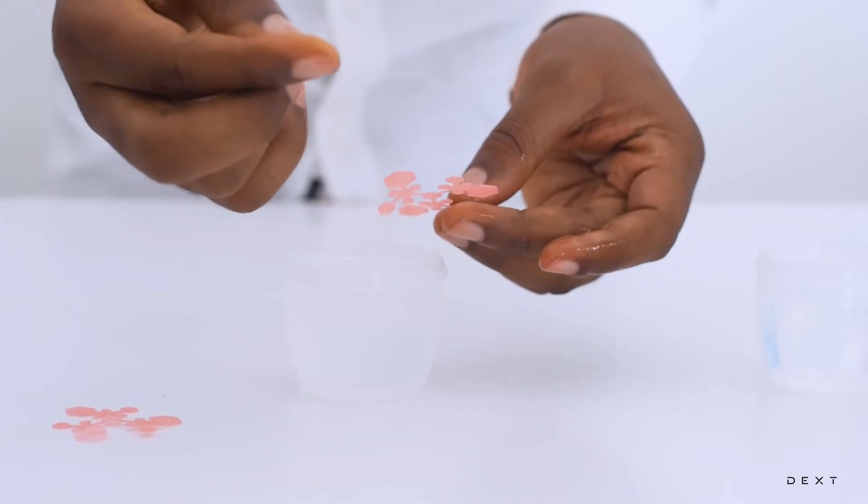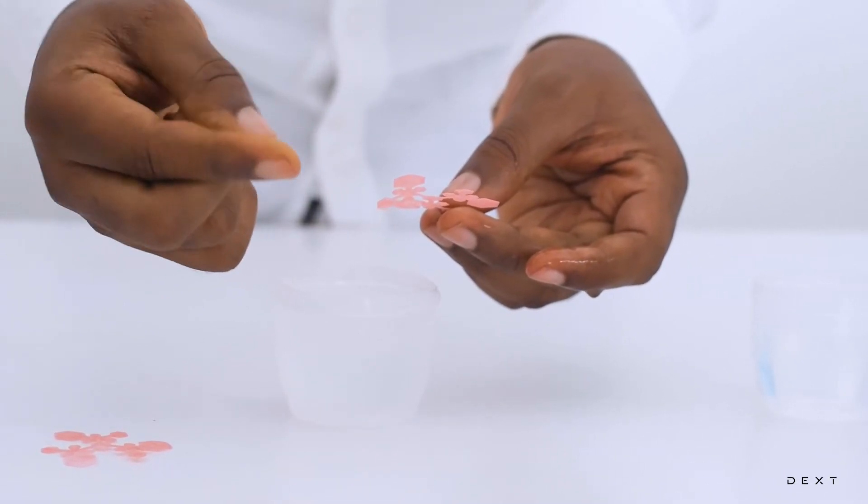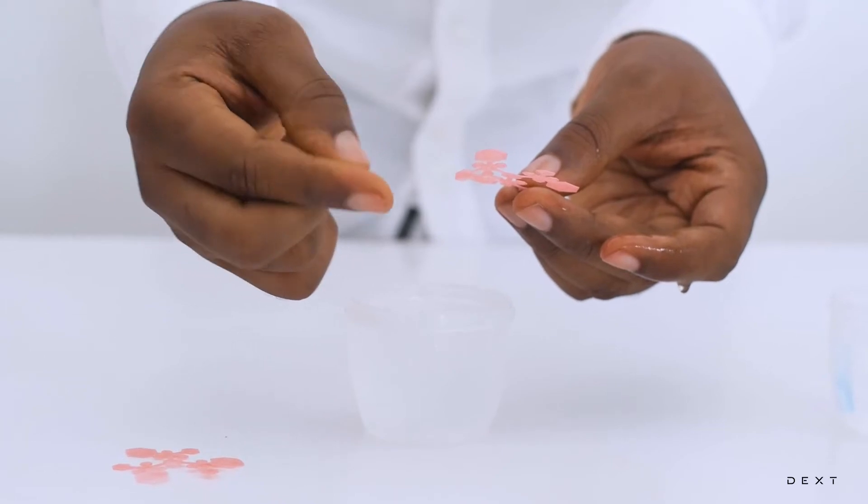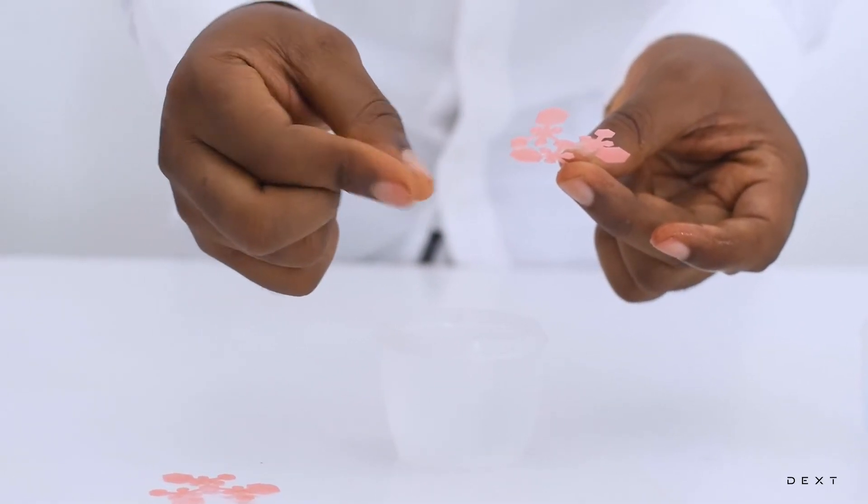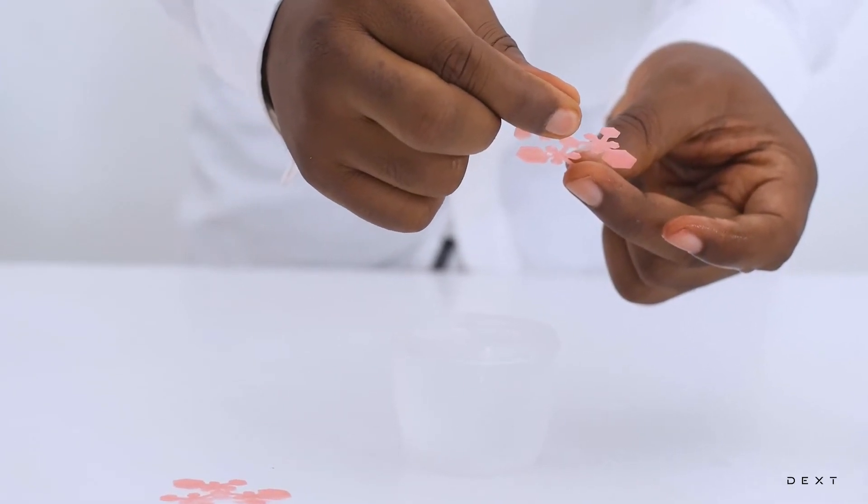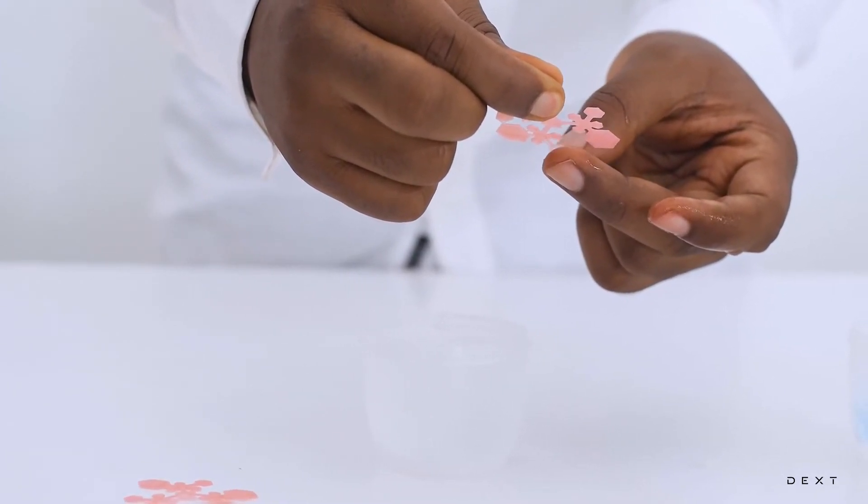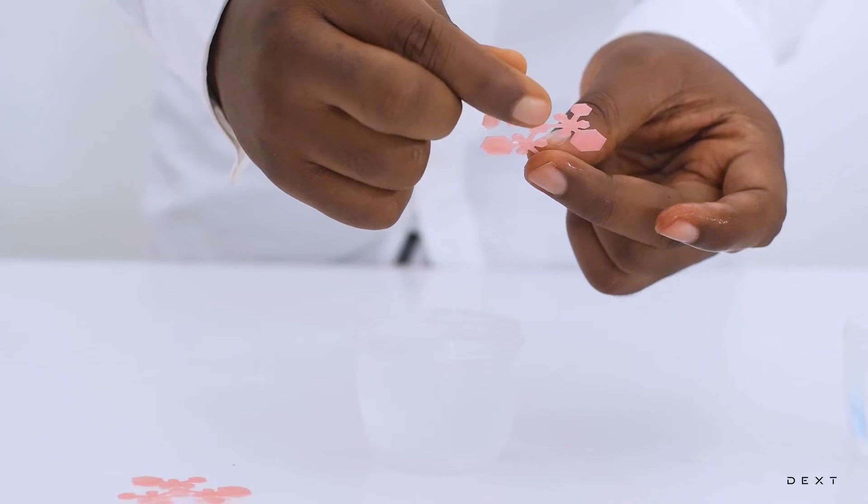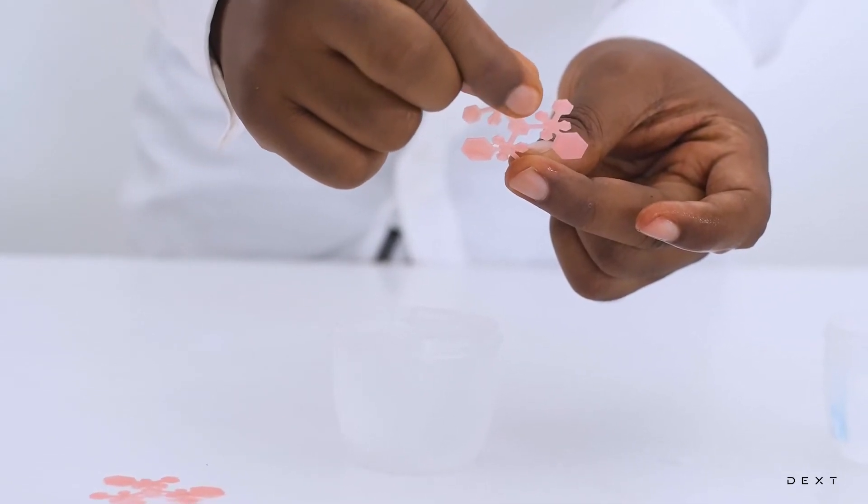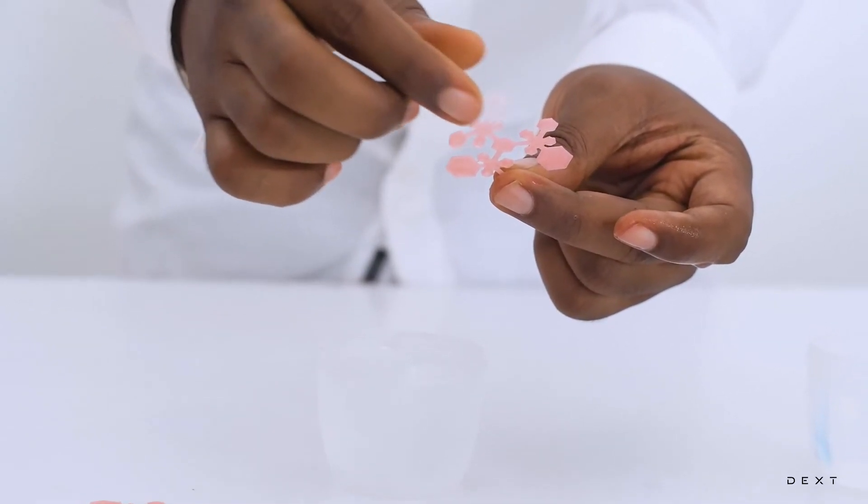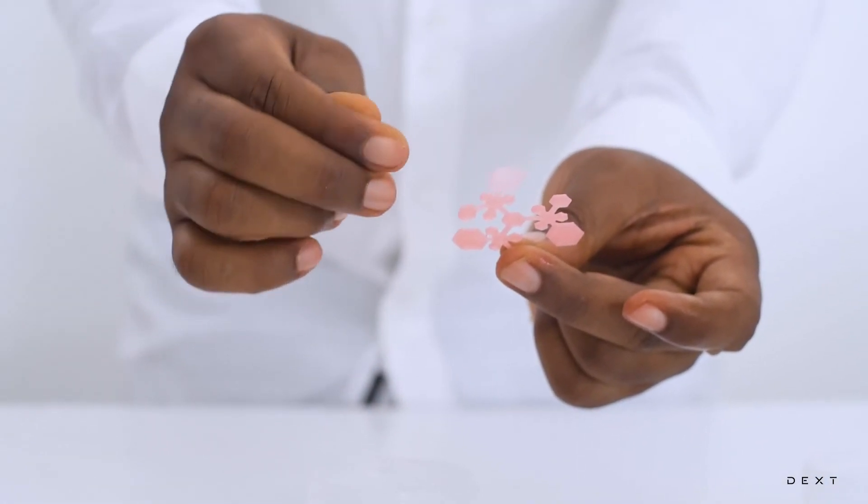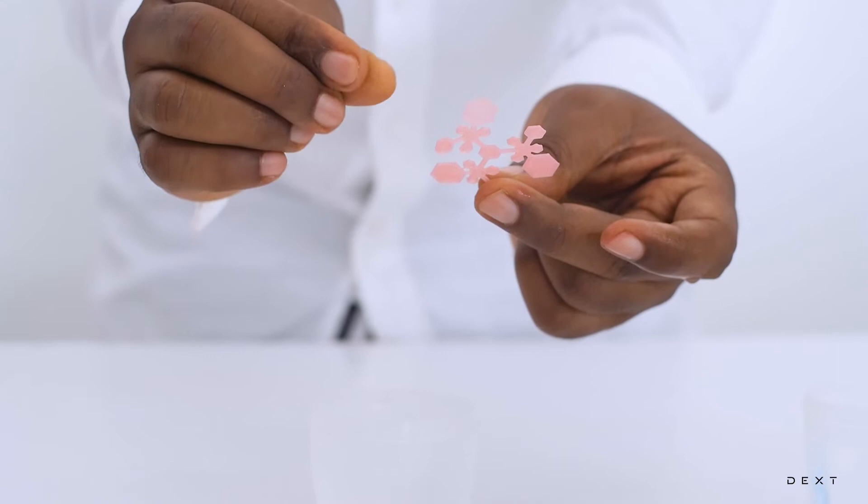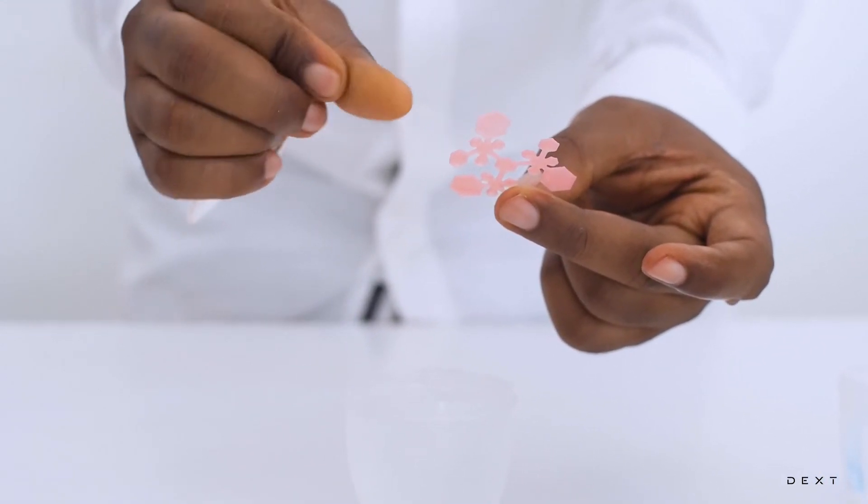Now, I'm going to rub my hands together so that the friction between my fingers will create some heat. And when I touch this with it long enough, I should be able to get it to change color. You see? And as soon as I leave it, it begins to change color again.